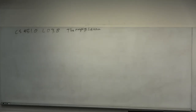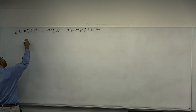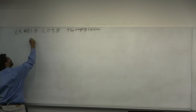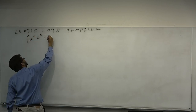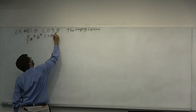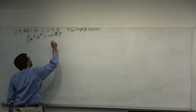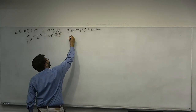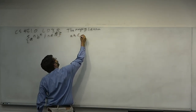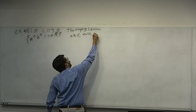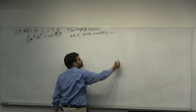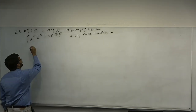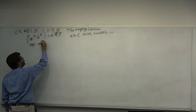They can only keep track of a few things at a time — however many states they have. Consider the language A^n B^n where N is a number. This contains strings like AB, the empty string, AABB, AAABBB, and so on. Notice that this is actually not equal to A* B*.